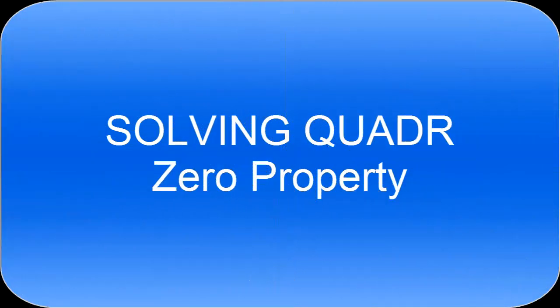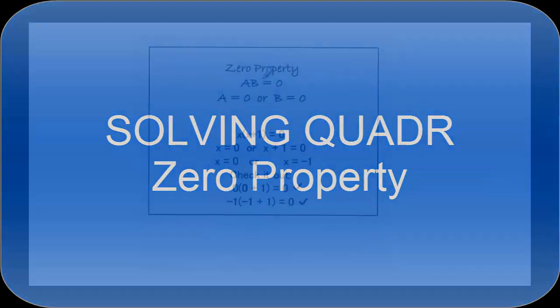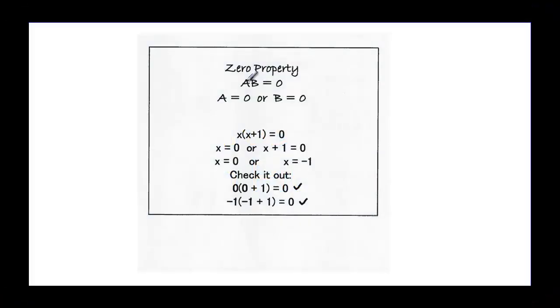This video is going to talk about the zero property to solve equations. The zero property says that if a times b is equal to zero, the only way to multiply and get zero is for something to be zero — so either a is equal to zero or b is equal to zero.